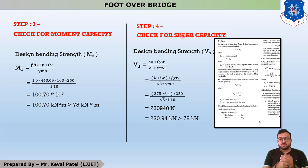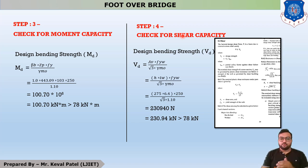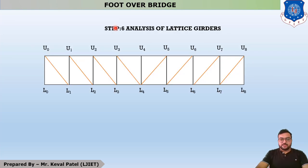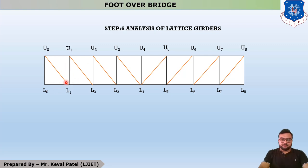After that we start the main sections design. The main sections are the top chord member, bottom chord member, vertical member, and diagonal member. The first task is to find out loads on the main members, which is step five. After calculating loads, step six is the analysis of the lattice girder, where we name all junctions like U0, U1, U2 — U indicates upper and L indicates lower.